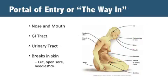Another thing that has to be present for a germ to infect another person is a way for the germ to enter the body of the new person. The most common portals or places of entry are the respiratory tract — nose or mouth — gastrointestinal tract, mouth, urinary tract, and breaks in the skin. Take a moment to look at the diagram to see additional portals of entry for germs.